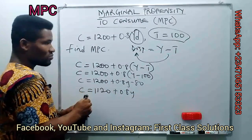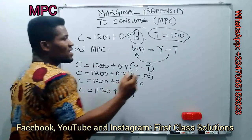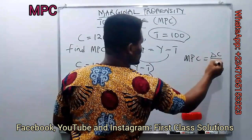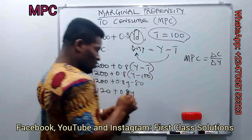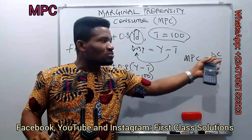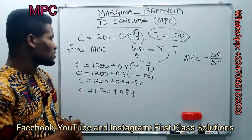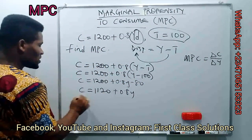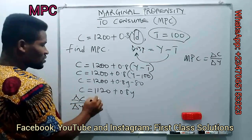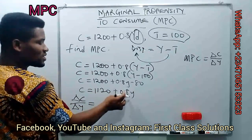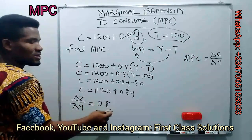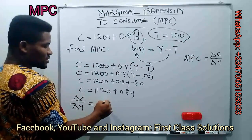Mathematically, our MPC is given as the change in consumption over a change in income — that is dC/dY. So in calculating the MPC, we differentiate C = 1120 + 0.8Y with respect to Y. Differentiating, we have zero plus 0.8, so our dC/dY, which is MPC, is 0.8. This is our answer.